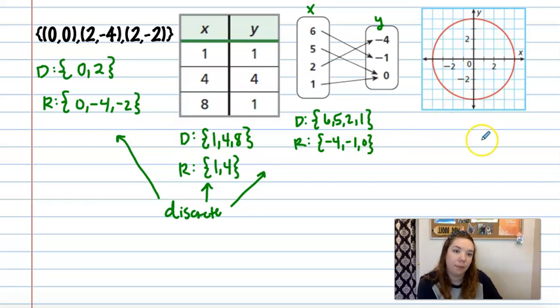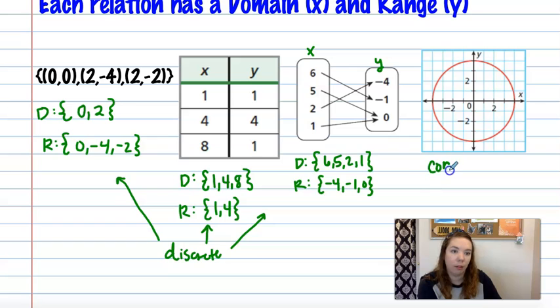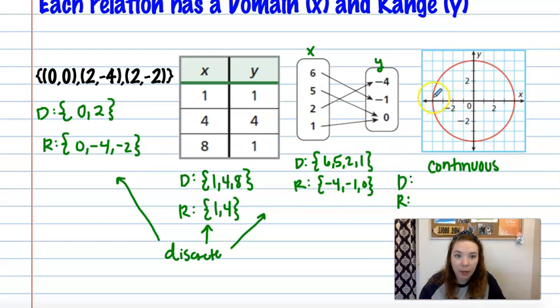This last one is continuous. So its domain and range is going to look a little different. So when we have continuous, we actually need to write a compound inequality. And so if we take a look, domain is the smallest to the largest x. So this would be from negative four up to positive four. My very smallest x is negative four. My very biggest x is positive four. So I'd write my compound inequality with negative four on the low end and positive four on the high end. Because we're using every single x in between here.